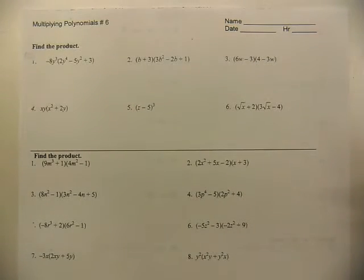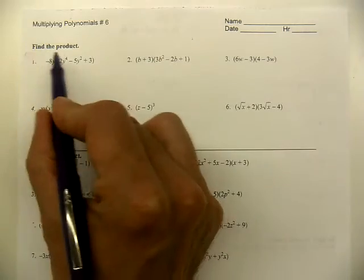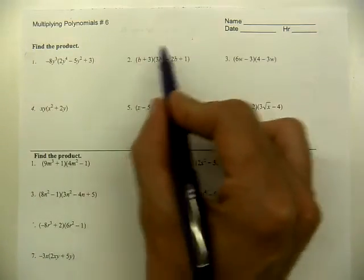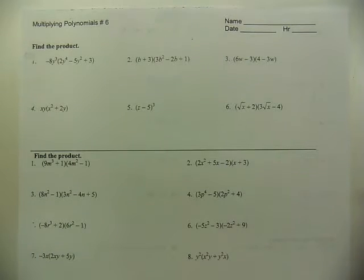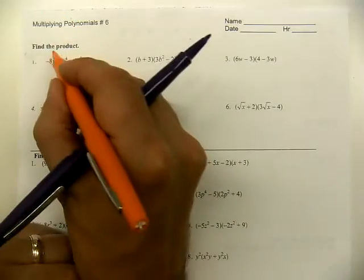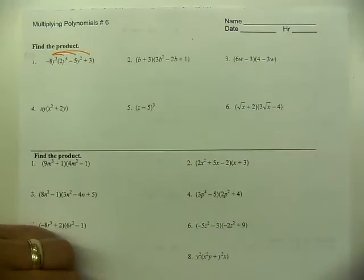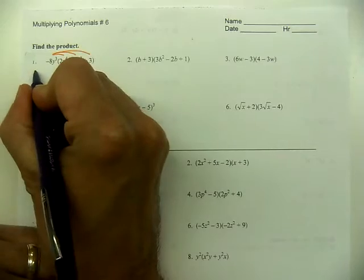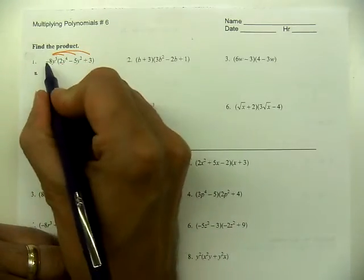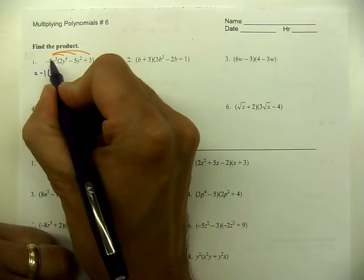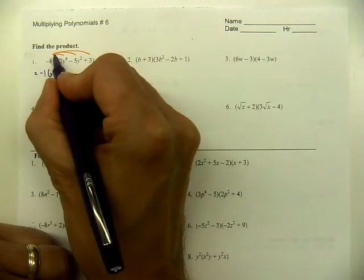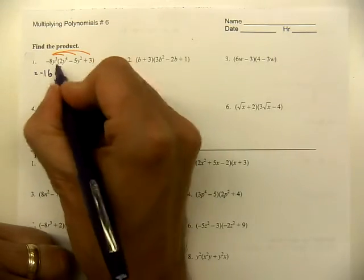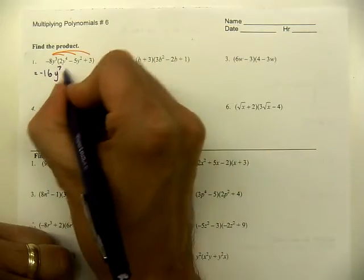Today we're looking at multiplying polynomials using the distributive property, double distribution, or foiling method. Most students are pretty comfortable with this. We're highlighting the fact that when multiplying the same base, you add those powers. Here we have negative eight times positive two, but when you have y cubed times y to the fourth, you add the powers, so three and four gives us seven.